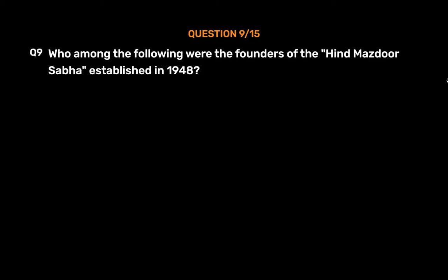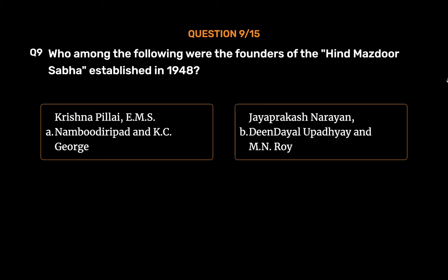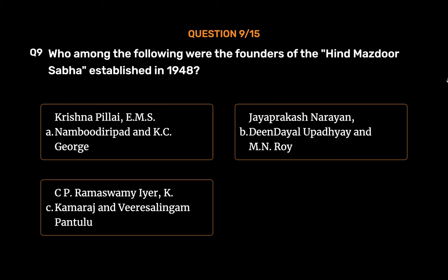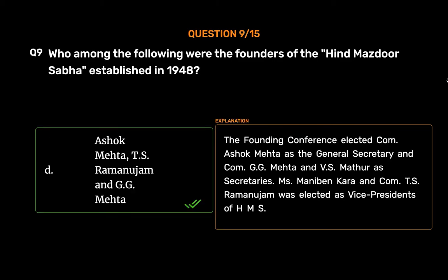Question No. 9. Who among the following were the founders of the Hind Mazdur Sabha established in 1948? Option A: Krishna Pillai, EMS Namboodiripad and K.C. George. Option B: Jayaprakash Narayan, Deen Dayal Upadhyay and M.N. Roy. Option C: C.P. Ramaswami Iyer, K. Kamaraj and Veeresalingam Pantulu. Option D: Ashok Mehta, T.S. Ramanujam and G.G. Mehta. The correct answer is Option D. The founding conference elected Ashok Mehta as General Secretary and G.G. Mehta and V.S. Mathur as secretaries. Mani Behn and T.S. Ramanujam were elected as Vice Presidents of HMS.